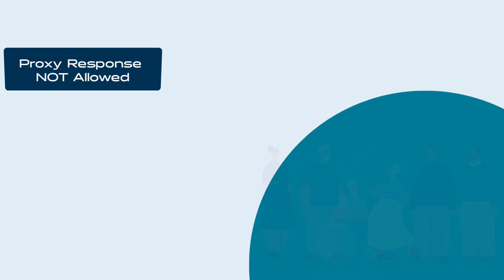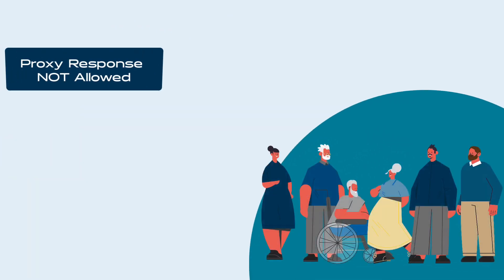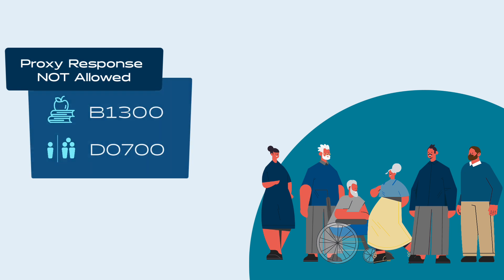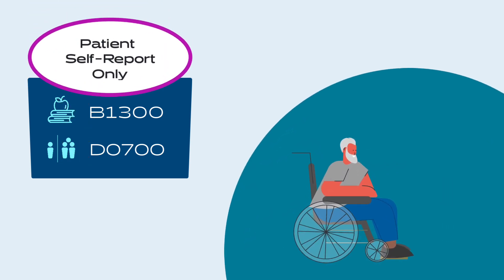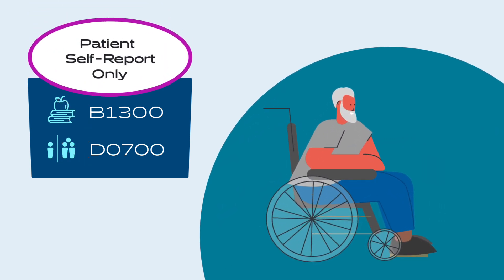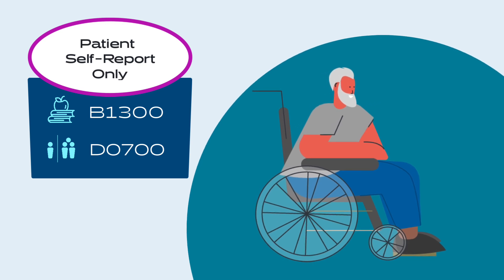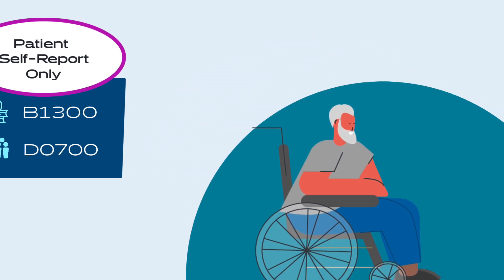A proxy response is not allowed when coding B1300 health literacy and D0700 social isolation. These items are intended to be patient self-report only. No other source should be used to identify the response for these items.